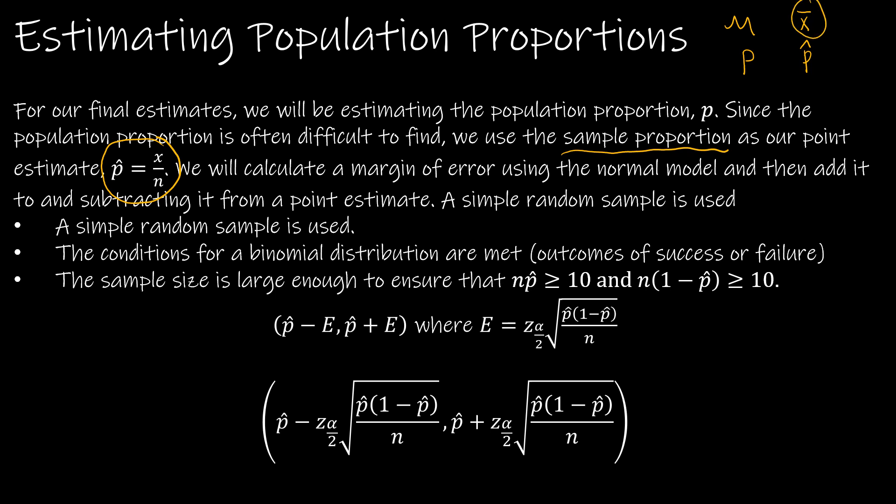We're going to ensure that a simple random sample is used, and the conditions for a binomial distribution are met, which just means success and failure. Remember this one is different - we're not looking for a sample size of at least 30 or the population distribution to be nearly normal.